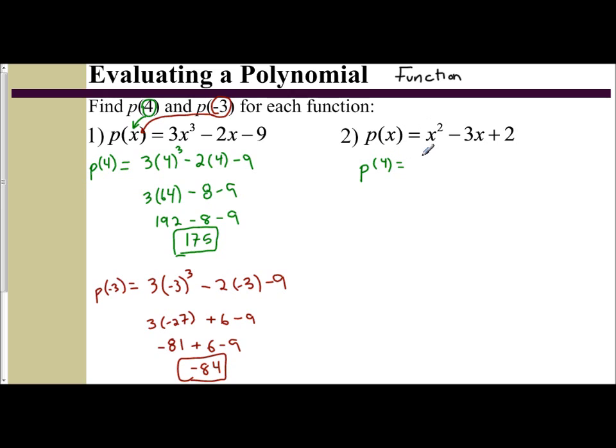And that's just telling you you're going to replace the x variable with 4. So I have 4², minus 3 times 4, plus 2. 4² is 16, minus 3 times 4, minus 12, plus 2. 16 minus 12 is 4, plus 2 is 6. And so now I know the value of the function at P(4).